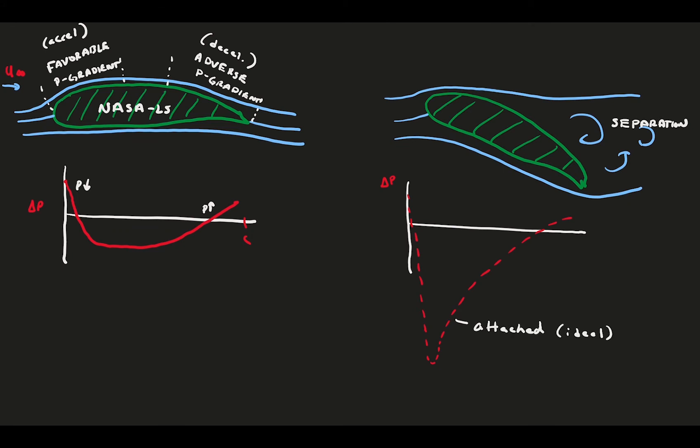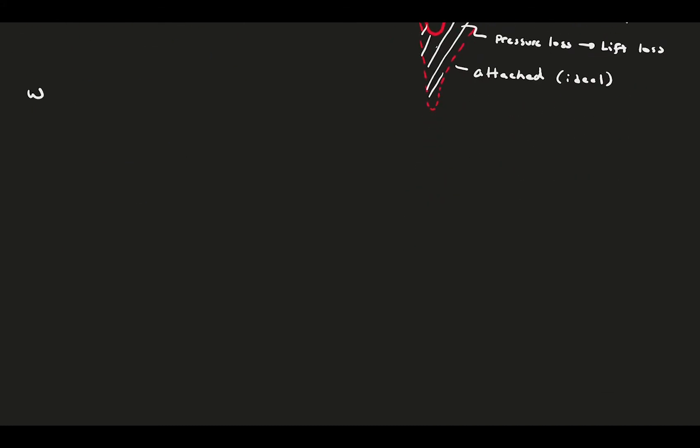However, in the real case, flow is separated, and that results in a lower pressure peak, and the pressure quickly balances to a relative constant. The difference between the ideal and real case here represents a loss in lift, because it is this low pressure on the top that derives the lift, and the separation was detrimental to that low pressure.